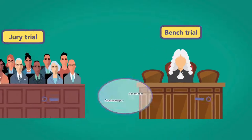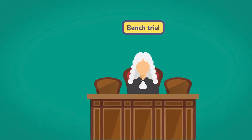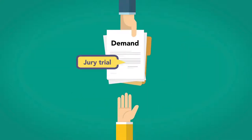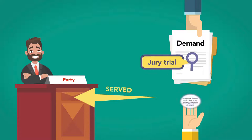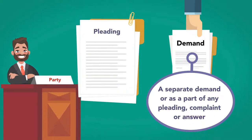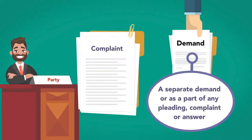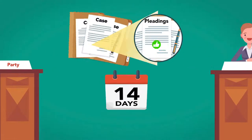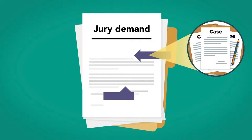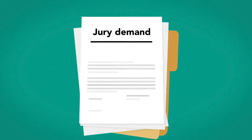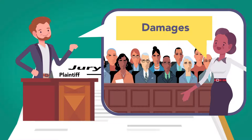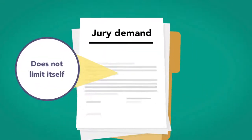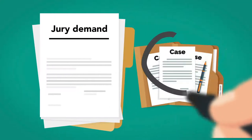While bench and jury trials each have advantages and disadvantages, a bench trial is typically faster and less expensive than a jury trial. The demand for a jury trial is served on the other party as a separate demand or as part of any pleading — the complaint or answer — but must be served within 14 days after all other pleadings in the case are complete. The jury demand can include the whole case or some issues in it. For example, the plaintiff may demand that the jury only hear matters of damages or only determine causation. If the jury demand does not limit itself, it is assumed that it applies to the entire case.